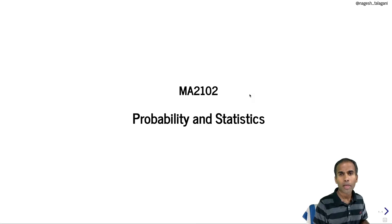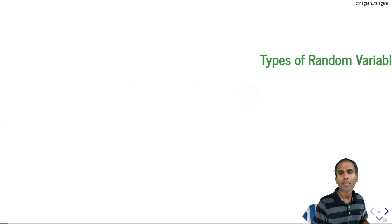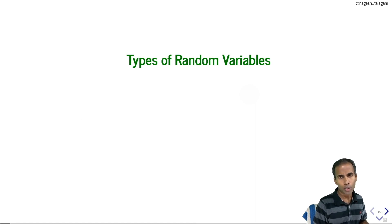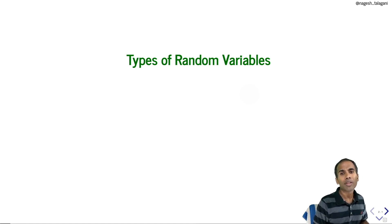Hi students, in this video we are going to talk about the types of random variables. For a given random variable X, the CDF is always a non-decreasing, right-continuous function with upper limit 1 and lower limit 0. In general, CDF may not be continuous — it could be discontinuous due to jump discontinuities.